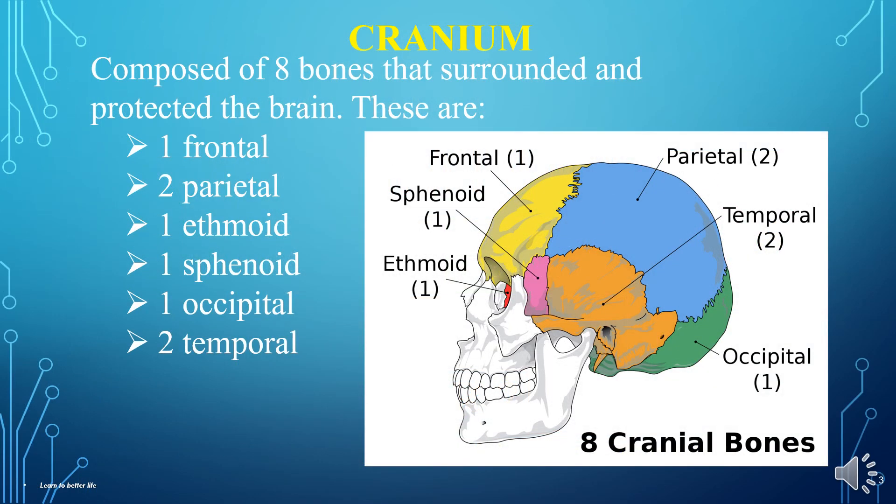Let's start with the cranium. The cranium is composed of eight bones that surround and protect the brain. These are: one frontal, two parietal, one ethmoid, one sphenoid, one occipital, and two temporal.